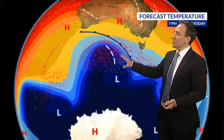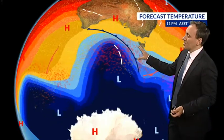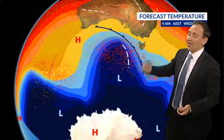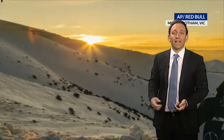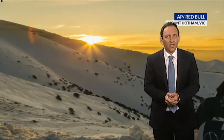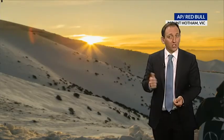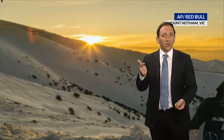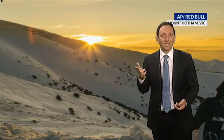A cold polar air mass is heading towards southeastern Australia, and many areas for the first time in 2018 have snow on their forecast. But what is the difference between snow, snow showers, and sleet?